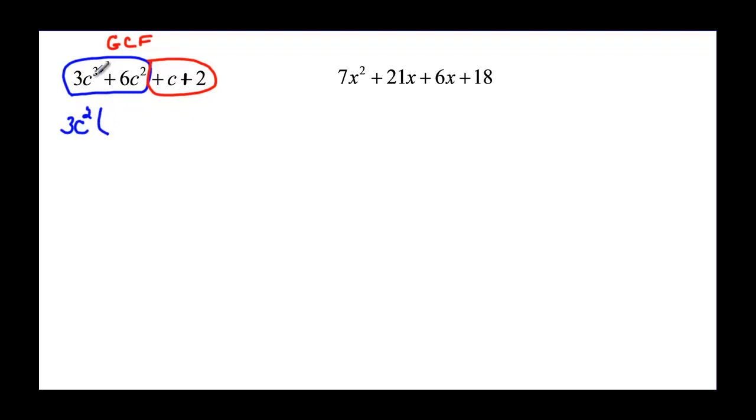I have 3c², and I need one more factor of c to make that first term correct. Now I need 3 times 2, a positive 2, to give me 6. I have c² on the outside, and that's all the c's I need, so I'm done factoring that one.